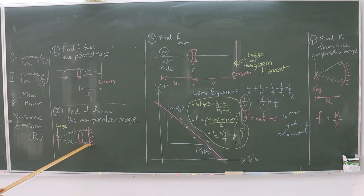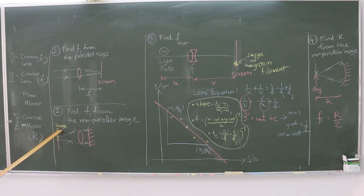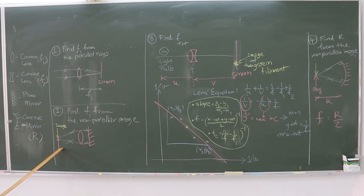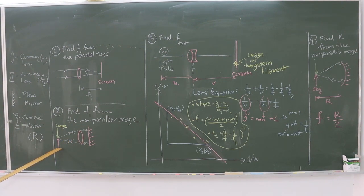Students should repeat this experiment two more times to get a more accurate value of F1, by changing the position of the lens and plane mirror, then moving the object until the non-parallax image is seen again.